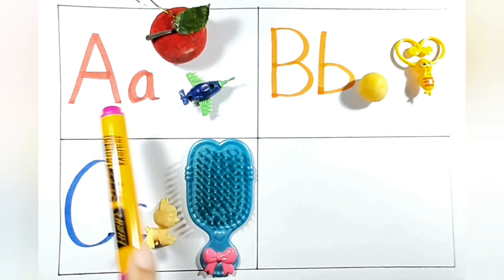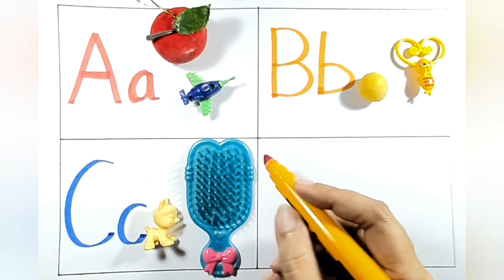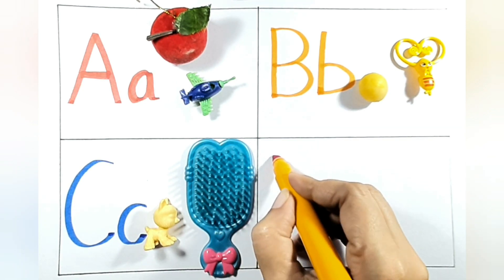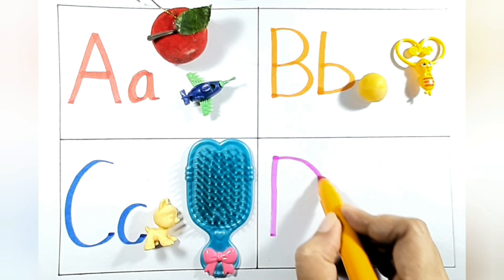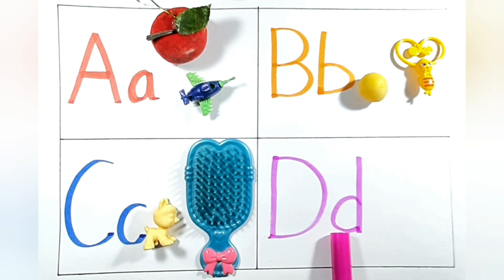A, B, C. Now after C we will write, yes, keep writing with me. Choose your color, sketch pen, anything. Yes, write D. This is capital D. Now small d towards capital D. Yes, small d is towards capital D.